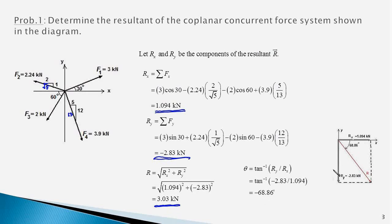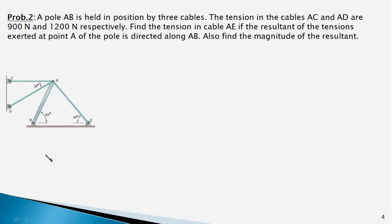So this was a fairly simple problem. Now let us handle a slightly more intricate problem. In this problem, we have a pole AB held in position with the help of three cables: AC, AD and AE. We are given the tension in two of these cables but we have to find the tension in the third cable so that the resultant of these three forces is directed along AB.